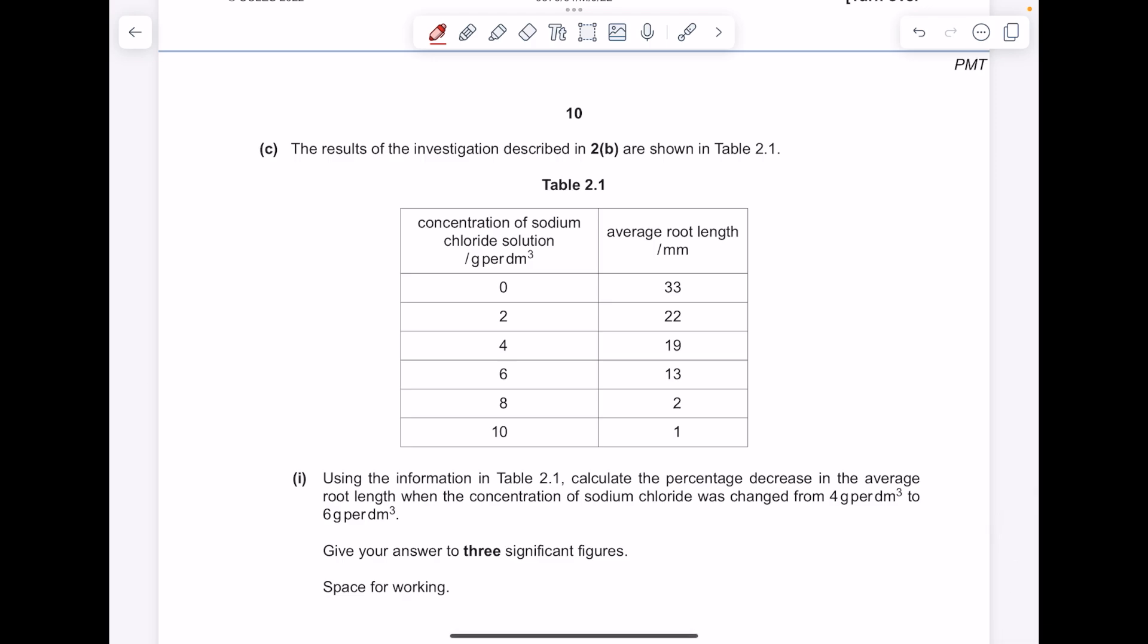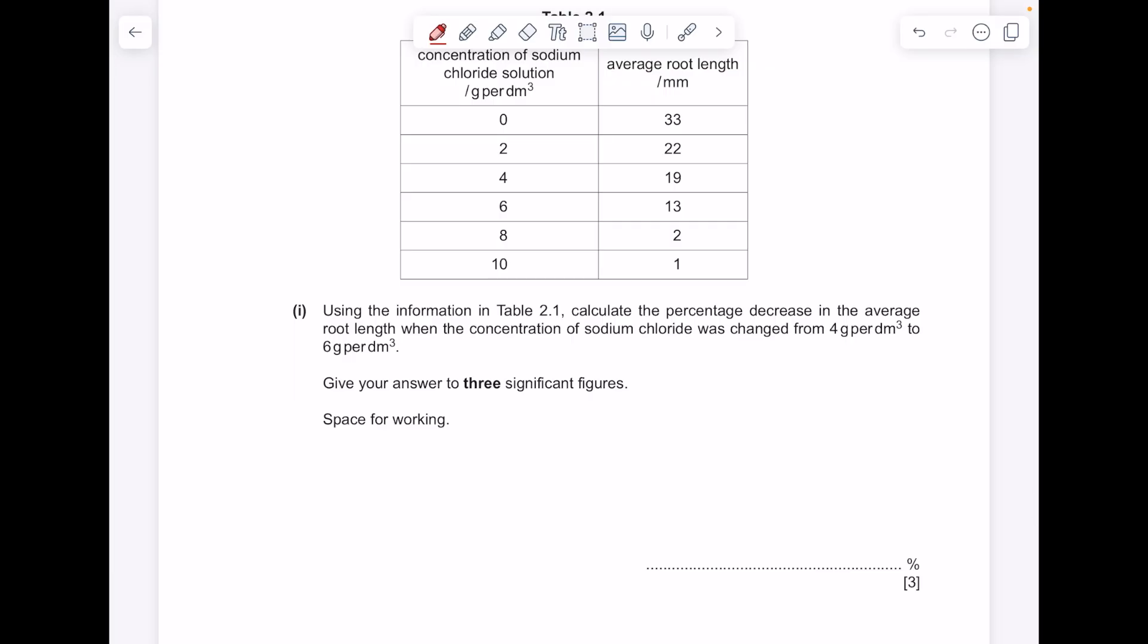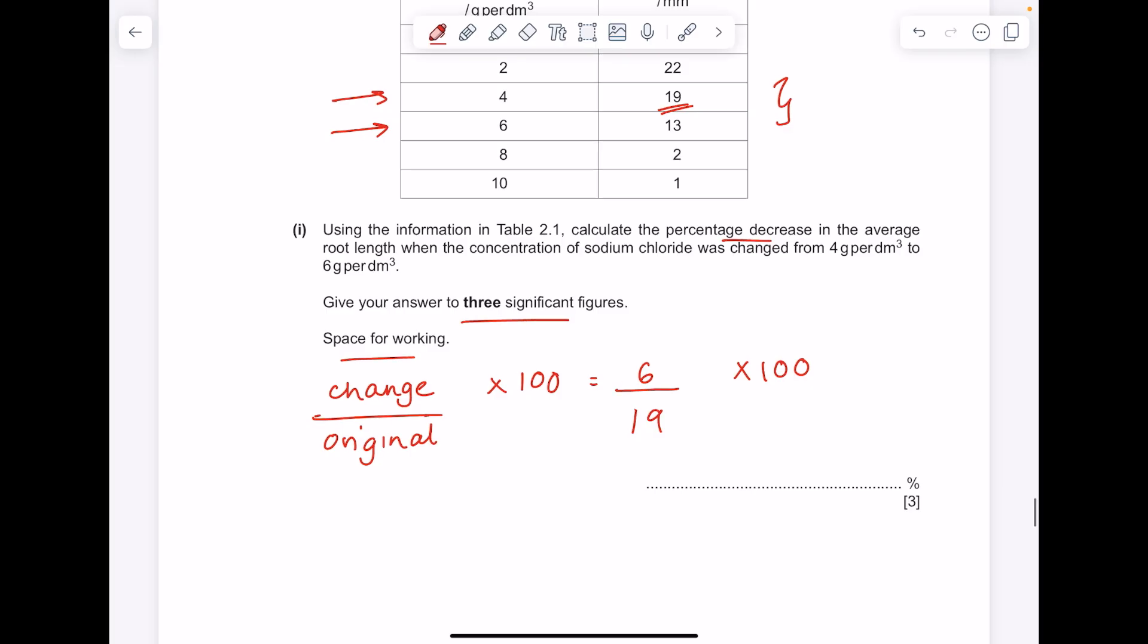The results of the investigation described in 2b are shown in the table. Using the information in table 2.1, calculate the percentage decrease in the average root length when the concentration of sodium chloride was changed from 4 grams to 6 grams. Give your answer to 3 sig fig and show your working. So we're using this equation, which is change over original times by 100. So what is that decrease? Well, it's the difference between those two numbers, 6. The original length was 19. Multiply that by 100. So that's 31.578, but we want our answer to 3 sig figs, so it's 31.6.